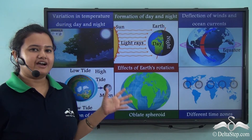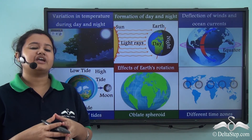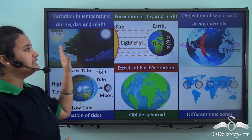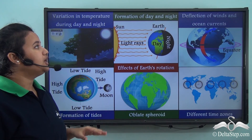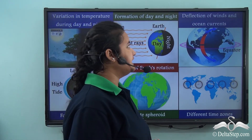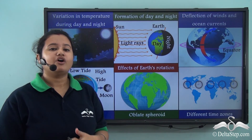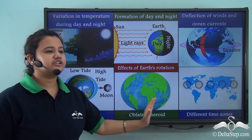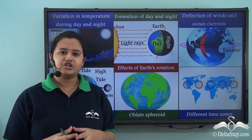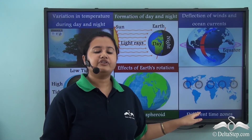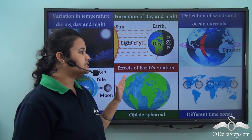Here we have a summary chart on the different effects of rotation. In our previous lesson, we already discussed variation in temperature of day and night, formation of day and night, and deflection of winds and ocean currents. In today's video, we discussed in detail the other three effects of rotation: formation of tides, oblate spheroid shape of the earth, and different time zones of the earth. All these are different effects of earth's rotation.